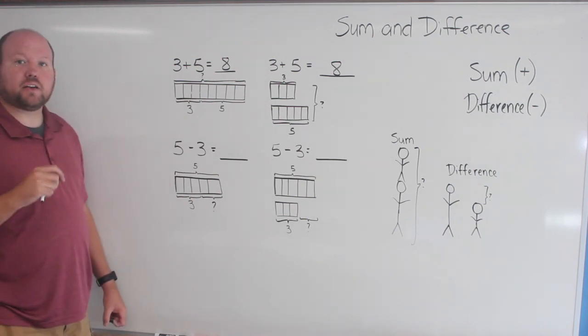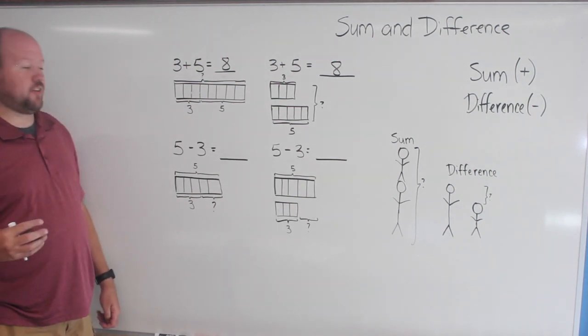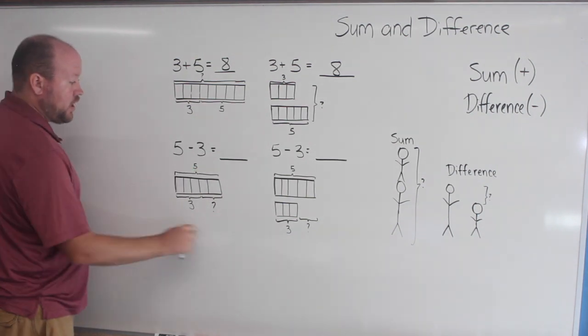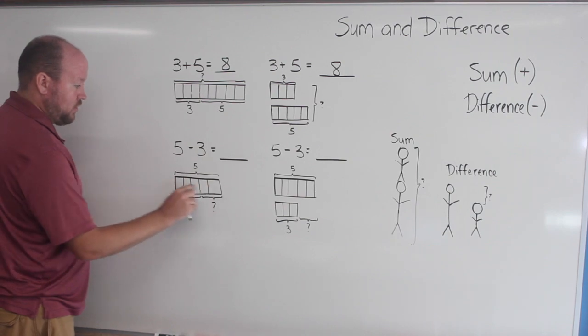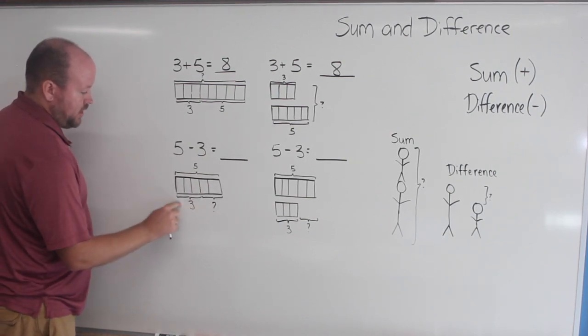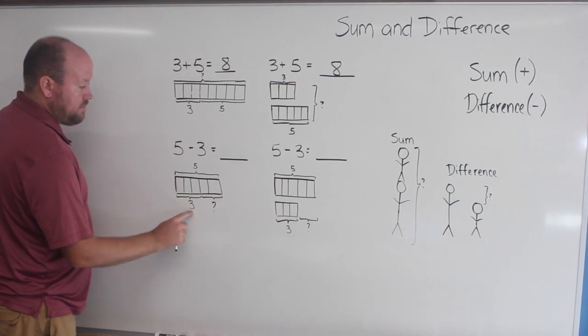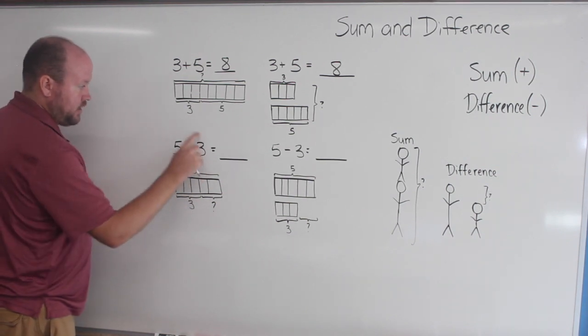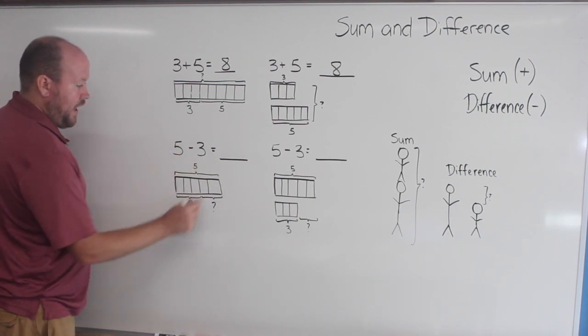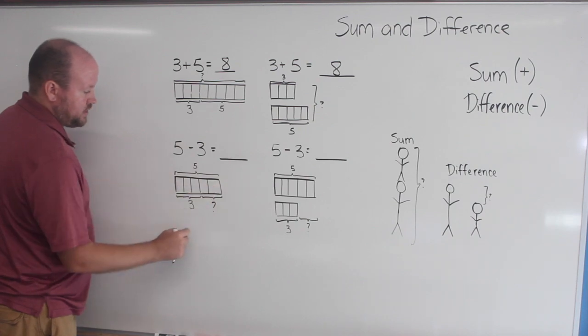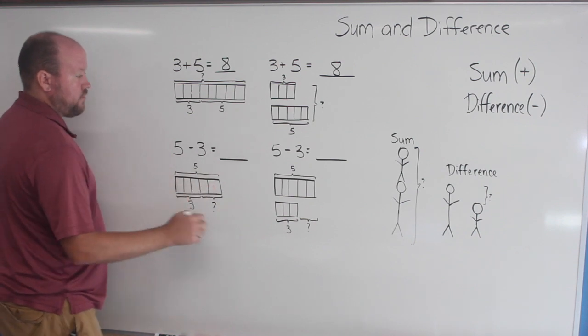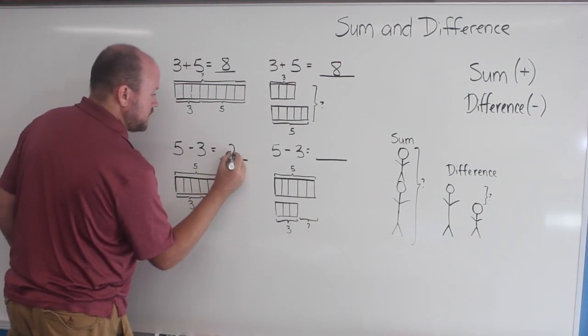Students also need to be able to understand how these models can be used to show difference. Here, I have five minus three. Here, I have a bar model, but this time the bar model is only equal to five. And here, this section of the bar model is equal to three. And so I am not looking for the sum of these two numbers, but the difference. How different are these two numbers? And right here is the answer. They are two boxes in my model different, and therefore they are two apart here.